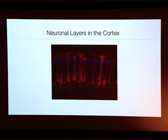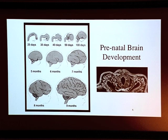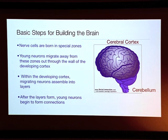The brain develops from a very simple structure — a little tube. Over the first month of life, this tube begins to fold up, especially near the cerebral cortex. The cerebral cortex begins to emerge by several months. Between five and nine months, the basic architecture is set forth by a program of migrations and cell assembly. Nerve cells are born on the inside of that tube in specialized zones, young neurons migrate away from the site where they're born, they go through the wall of the developing cortex where they assemble into layers, and then neurons begin to form connections and function as circuits.